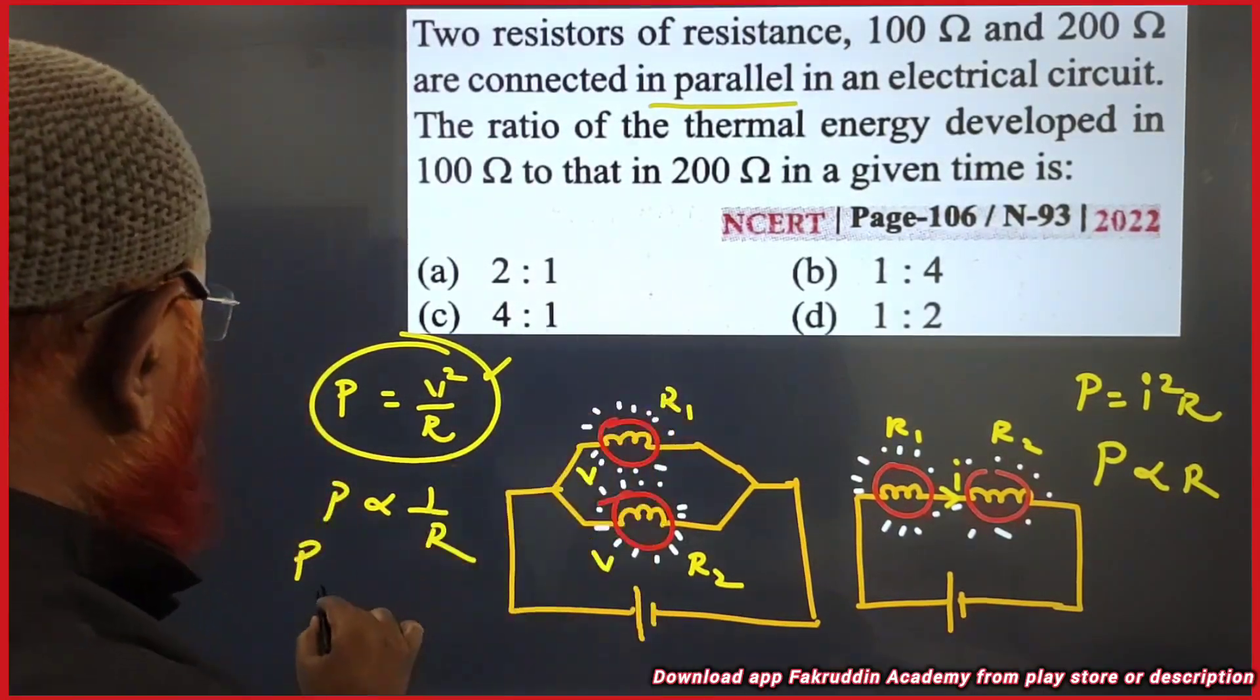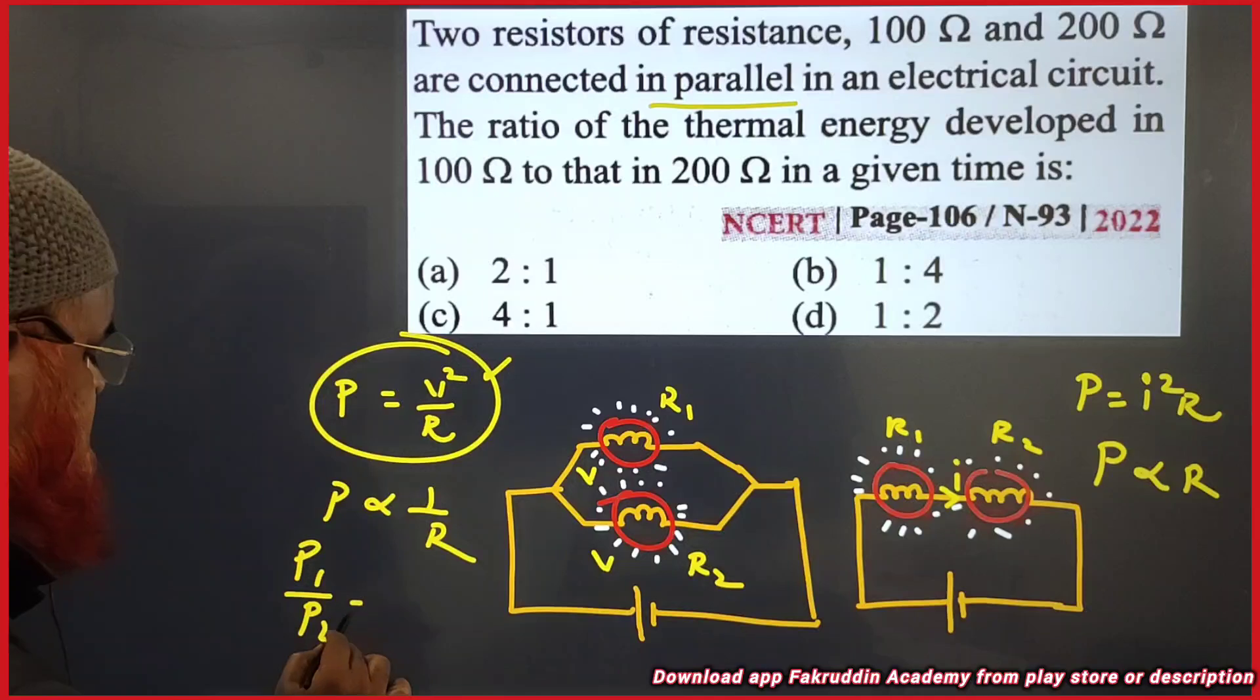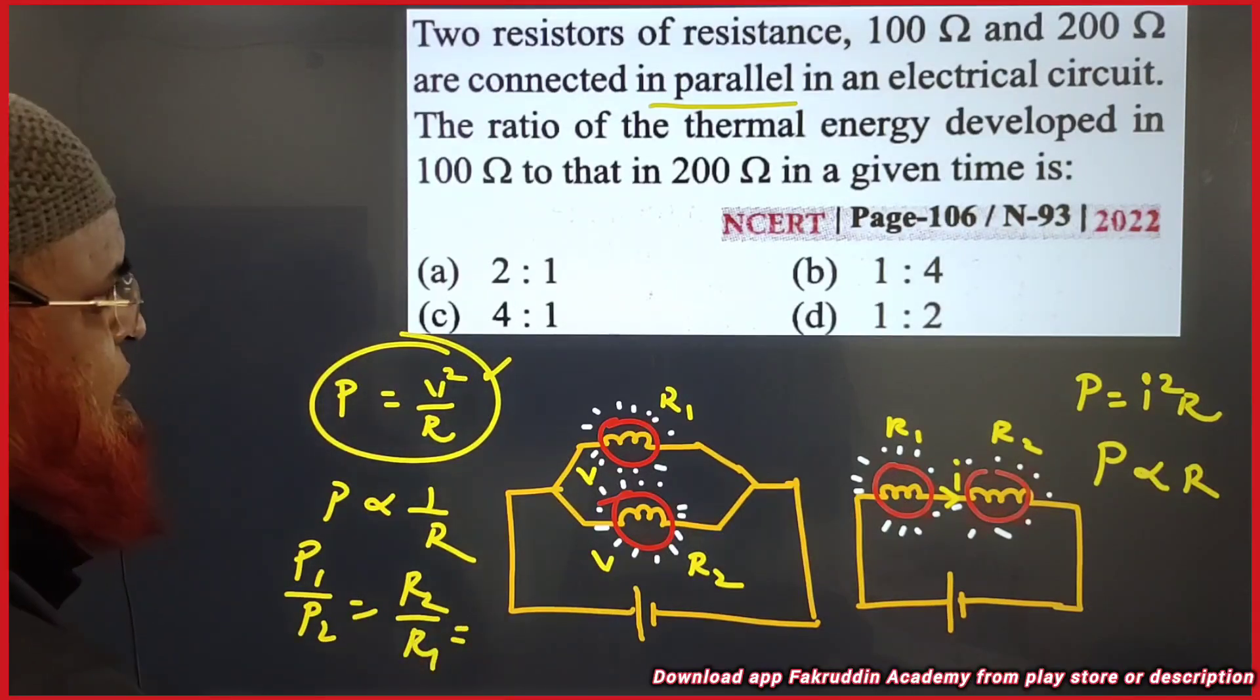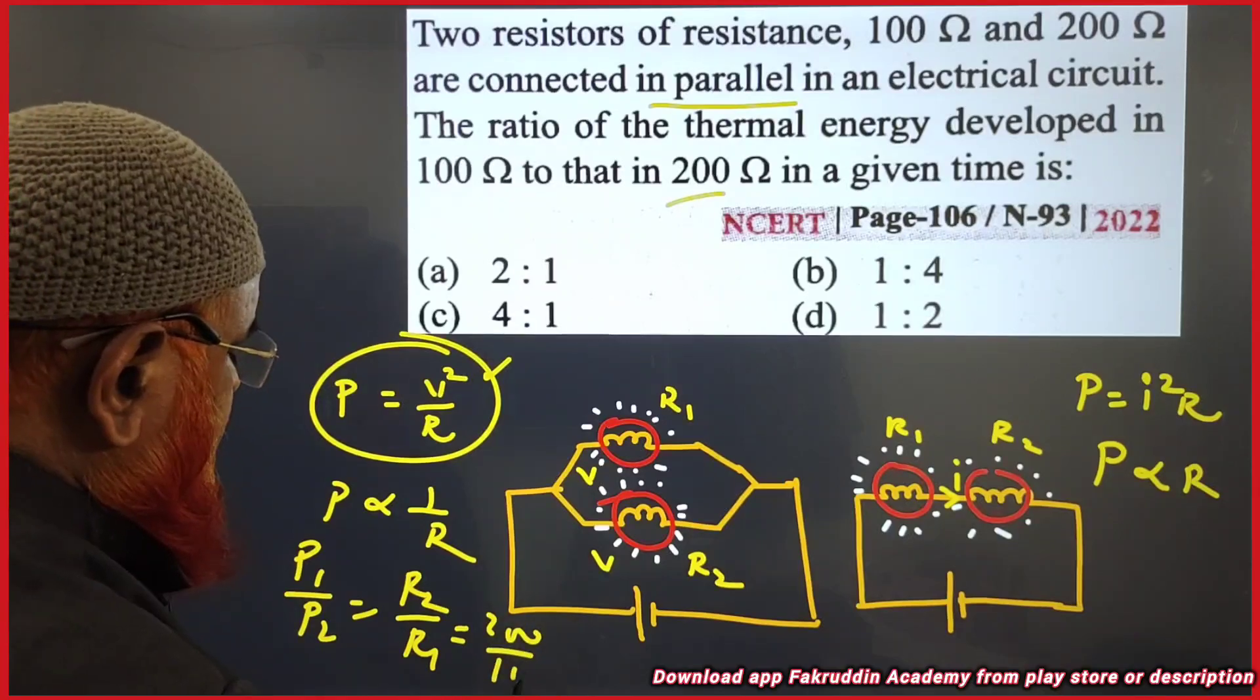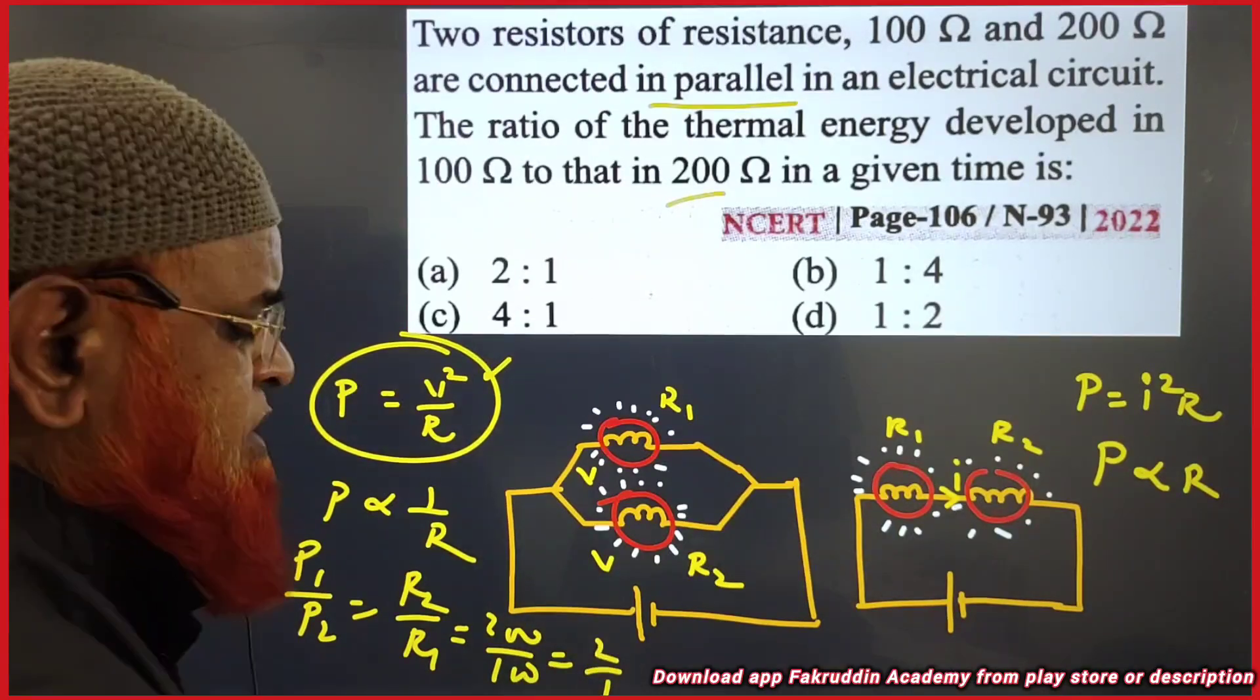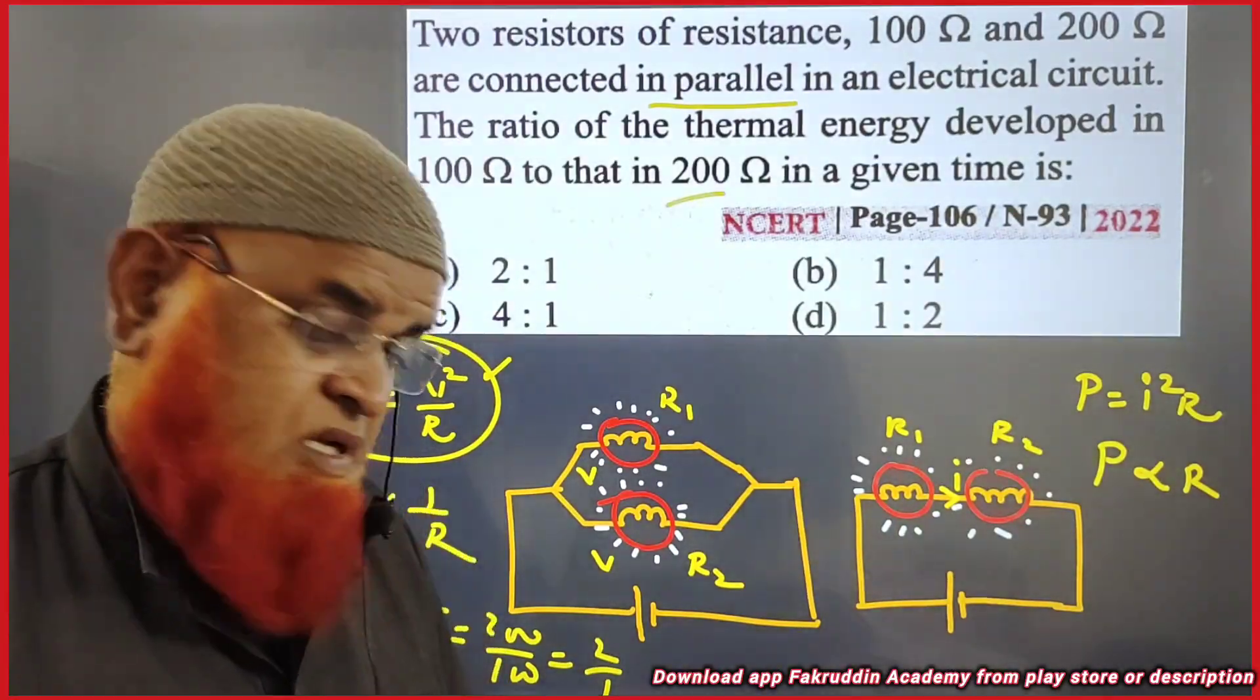So it is asking the ratio here. P1 by P2 is equal to R2 by R1. What is R2 here? It is 200 divided by 100. So that's it. This is the concept here.